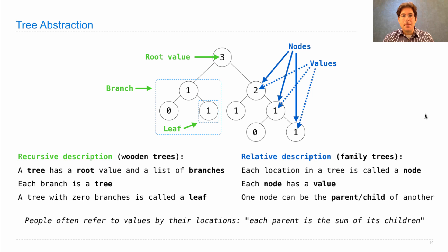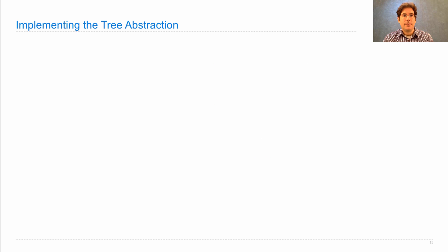So now you know what a tree is, but there is no built-in type to keep track of trees for us. We have to define our own data abstraction. So the way we'll implement the tree abstraction is using the recursive description, which is that a tree has a root value and a list of branches. So we'll just create a constructor that takes a root value and a list of branches and builds a tree. Each branch is a tree itself.